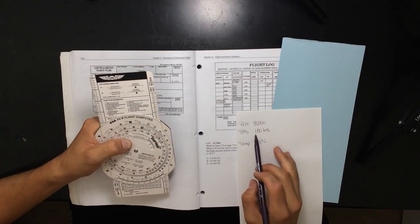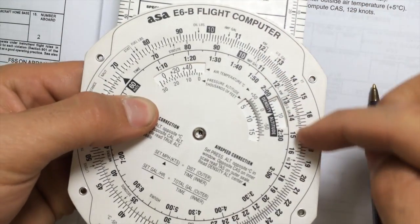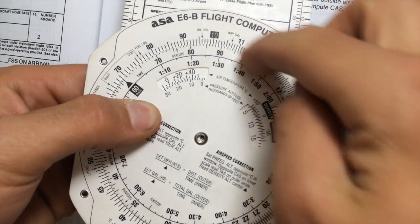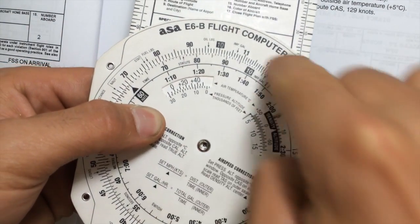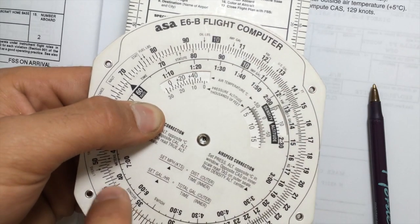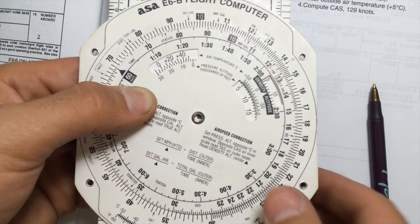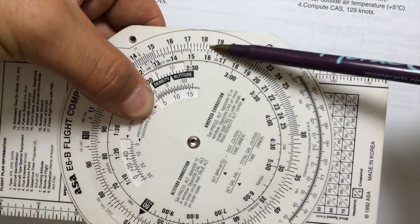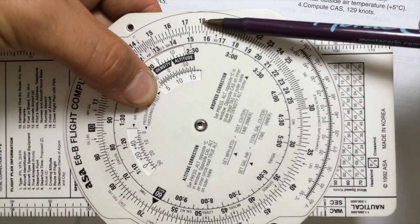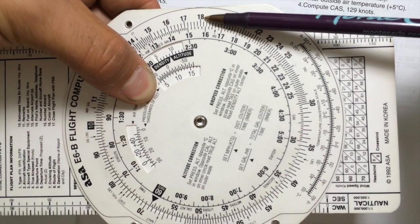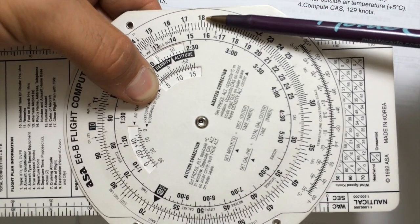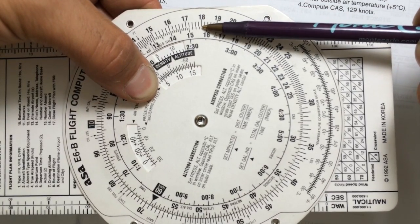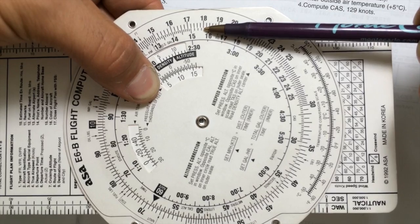All right, so then after you align your altitude opposite of your temperature, you're going to go overhead and now use your true airspeed. You're going to find your true airspeed on the outer scale here because right now we're working on the inner circle here. Now we're going to go on the outer circle to find our true airspeed. So we're going to leave this where it's at and we're going to go ahead and find our true airspeed, which is 180. So we're going to count that as 180, which we'll pretend there's a zero at the end there.